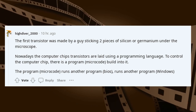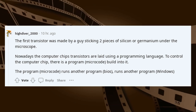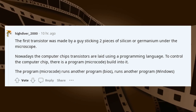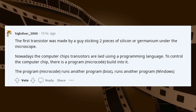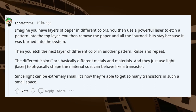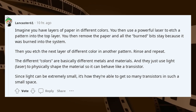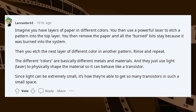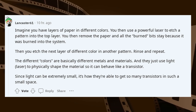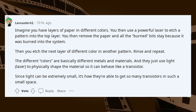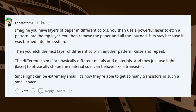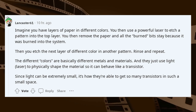Nowadays the computer chip's transistors are laid out using a programming language. Imagine you have layers of paper in different colors. You use a powerful laser to etch a pattern into the top layer, then remove the paper — all the burned bits stay because they were burned into the material. Then you etch the next layer of different color in another pattern, and rinse and repeat. The different colors represent different metals and materials, and they use light and laser to physically shape the material so it can behave like a transistor. Since light can be extremely precise, it's how they're able to get so many transistors in such a small space.